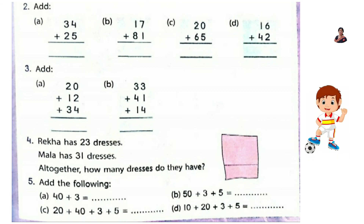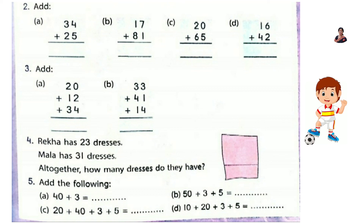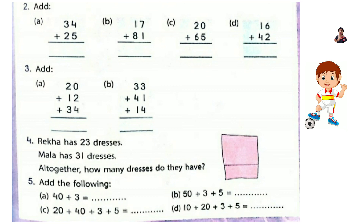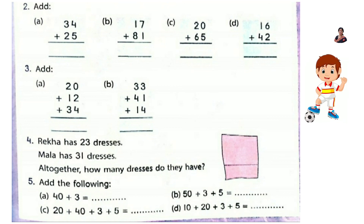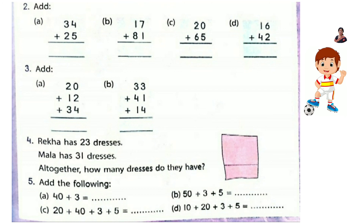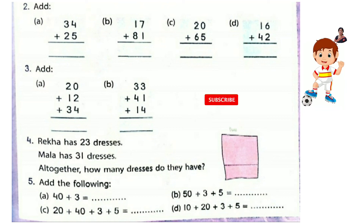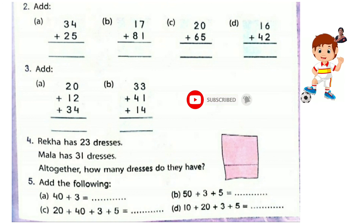The next question you can do by yourself. Question 4: Rekha has 23 dresses. Mala has 31 dresses. Altogether how many dresses do they have? Add 23 and 31. Question 5: add the following. 40 plus 3 is 43. And 20 plus 40 plus 3 plus 5: 20 plus 40 is 60, and 3 plus 5 is 8, so the answer is 68. Do problems C and D the same way.